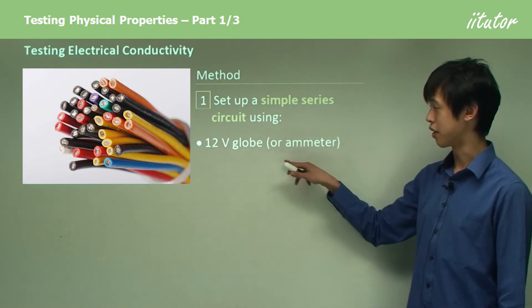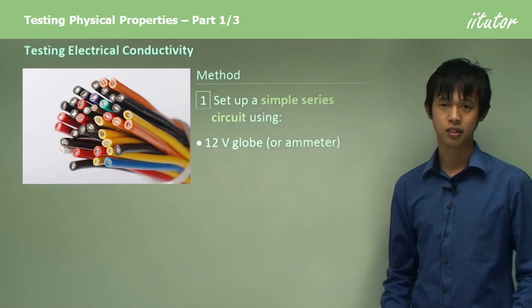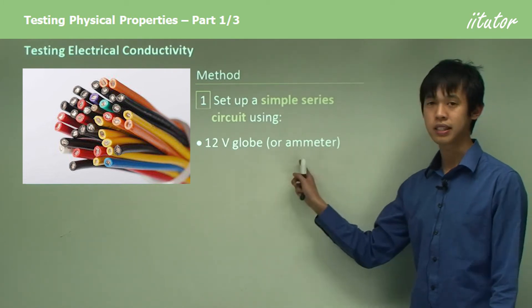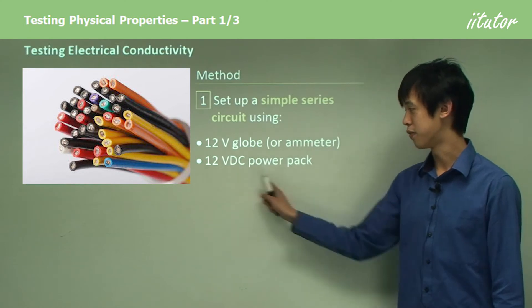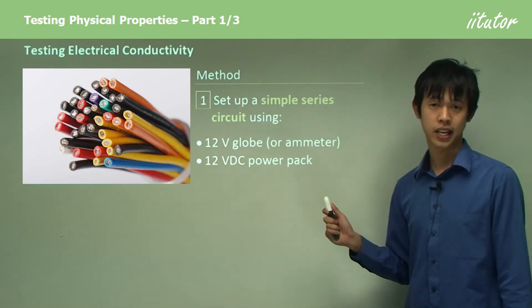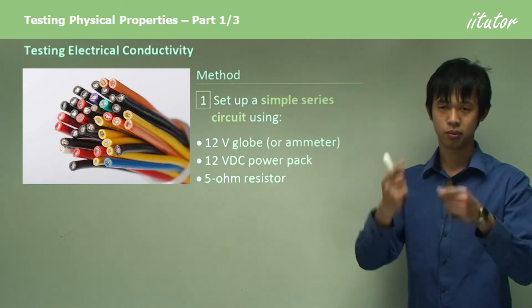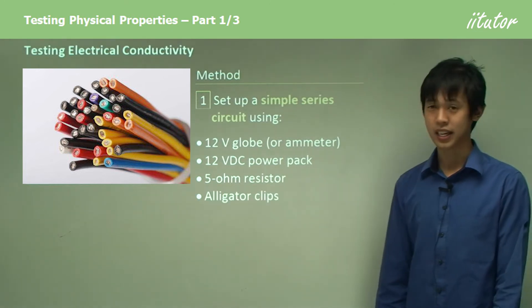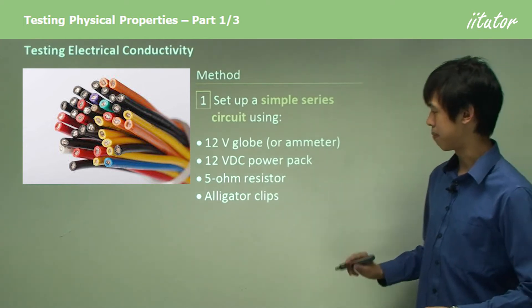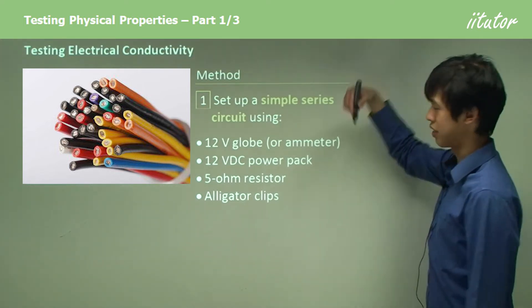We're going to have a 12 volt globe, just a light globe, or you can use an ammeter. We need a 12 volt DC power pack, a 5 ohm resistor, and alligator clips. We also need the sample we've just talked about.